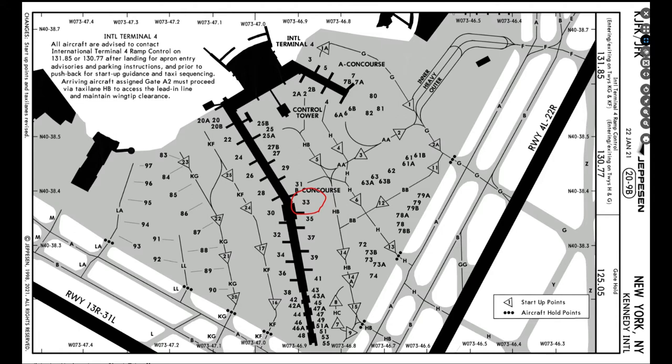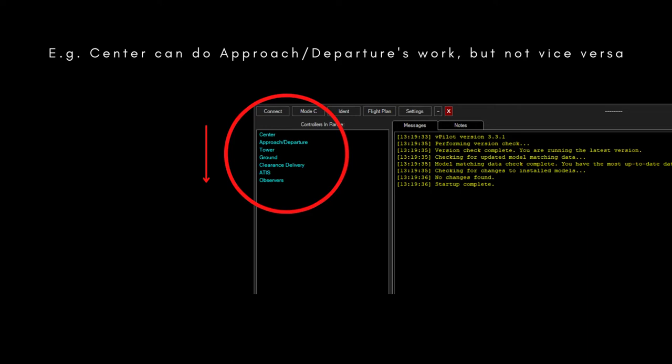I'm going to tune the frequency of New York clearance delivery, tower, approach, or center according to which ones are online. VATSIM has a top-down approach where center can do everybody else's work under them, but not the other way around. For example, ground — who handles taxi instructions — cannot do the work of tower or center. You always pick the highest position available unless a lower position like tower or ground suits your needs more accurately.